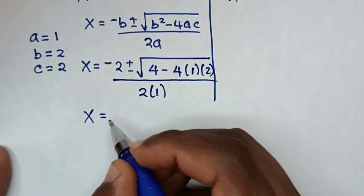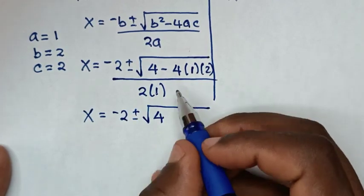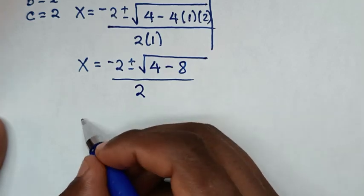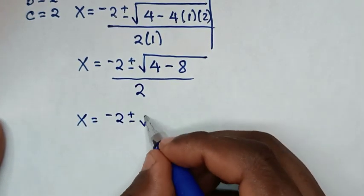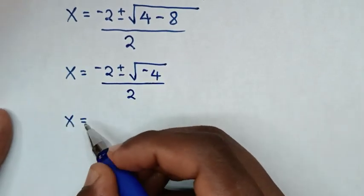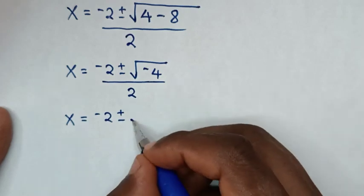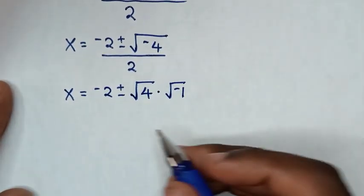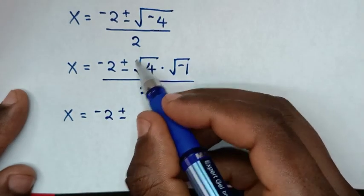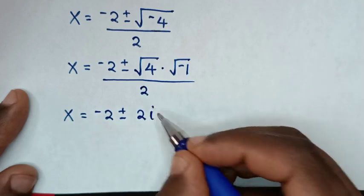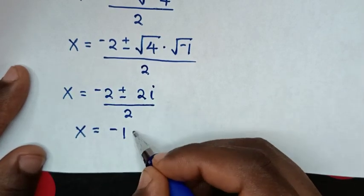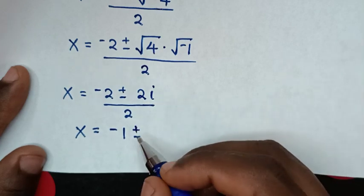Then it will be x equals negative 2 plus or minus square root of 4 minus 4 times 1 times 2, which is negative 8, over 2. Then x equals negative 2 plus or minus square root of 4 minus 8, which is negative 4. This gives negative 2 plus or minus square root of 4 times square root of negative 1, over 2, which is negative 2 plus or minus 2i over 2. So x equals negative 1 plus or minus i.